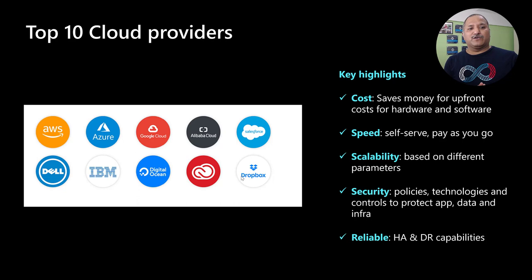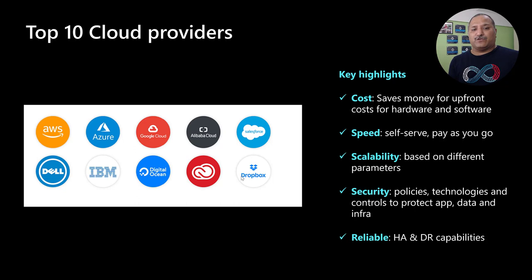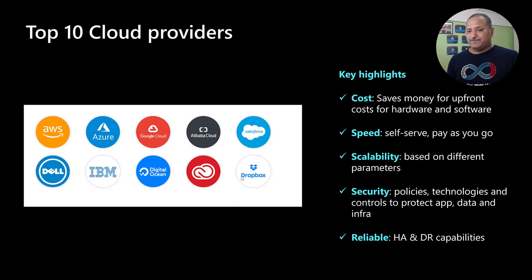A classic example: when you start your application, if you have a very few number of users, you can start with a minimal number of servers, and as the resource usage or as your user group increases — as the number of users using the application increases — based on the capacity, we can increase the hardware as well as software resources on cloud. It's not so easy in the on-premise world. Scalability is another factor where, based on different parameters, we can scale the resources.